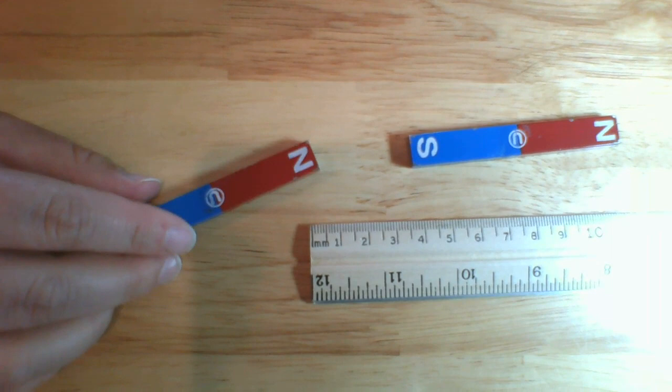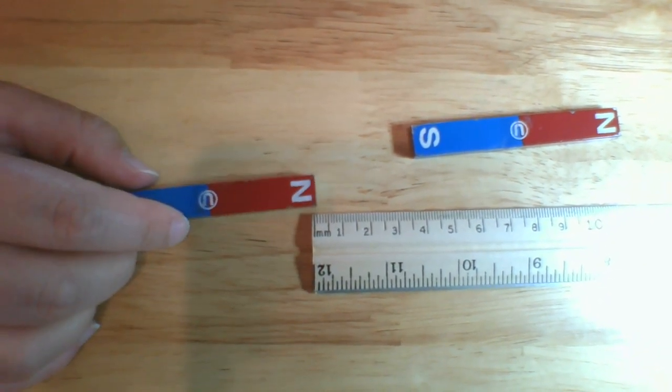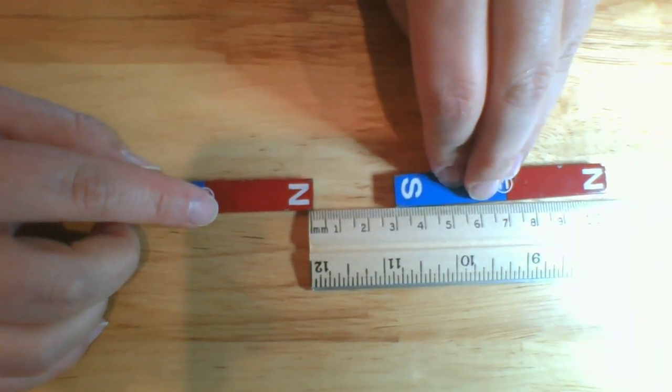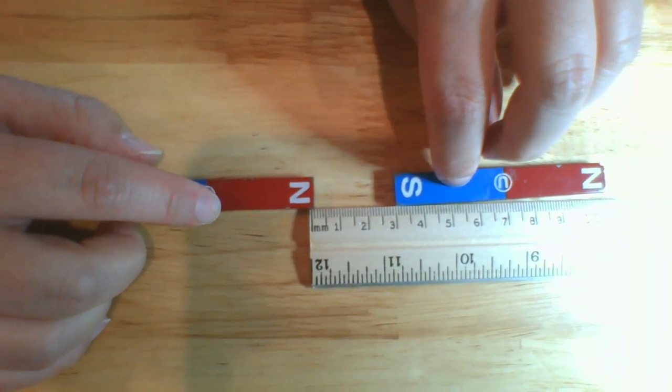First, I am going to put this magnet at zero, and I'm going to place the other magnet at three centimeters. And then I'm going to let go and see what happens.